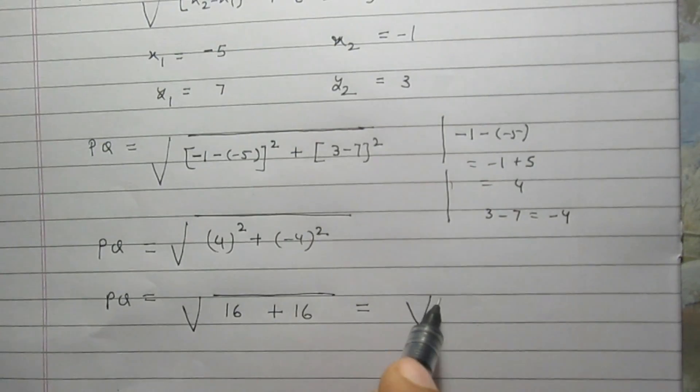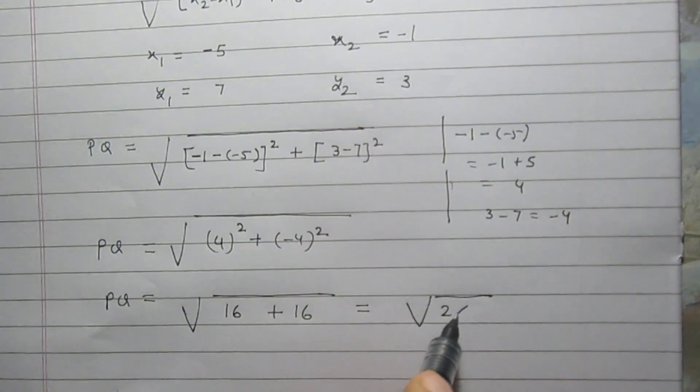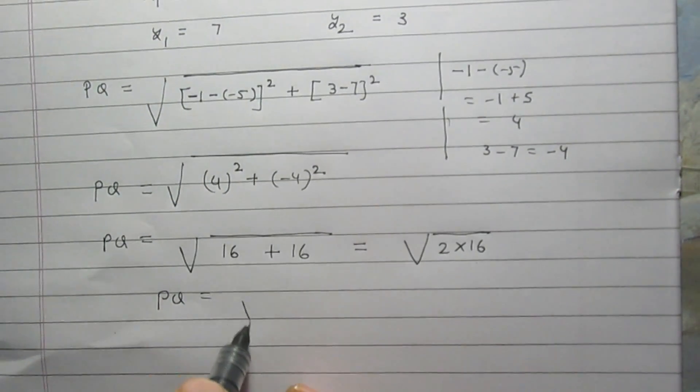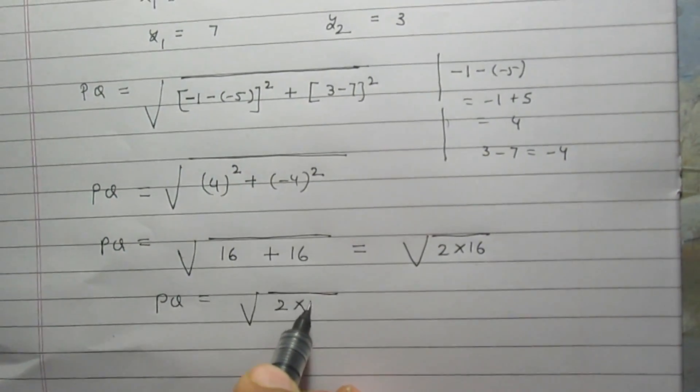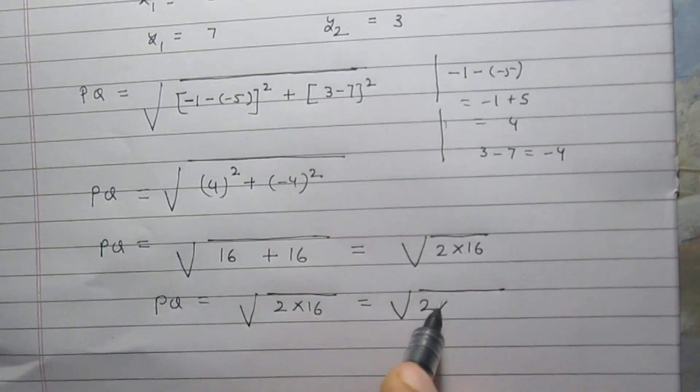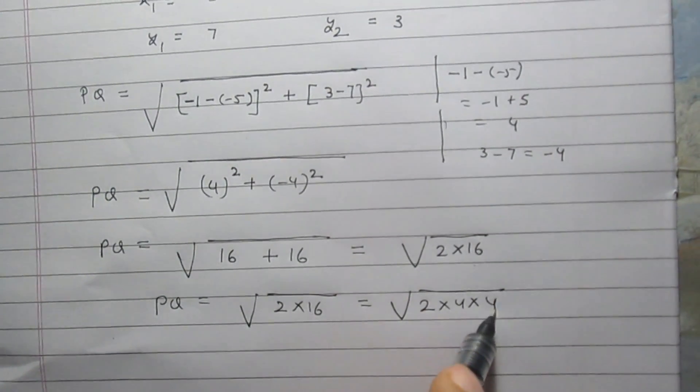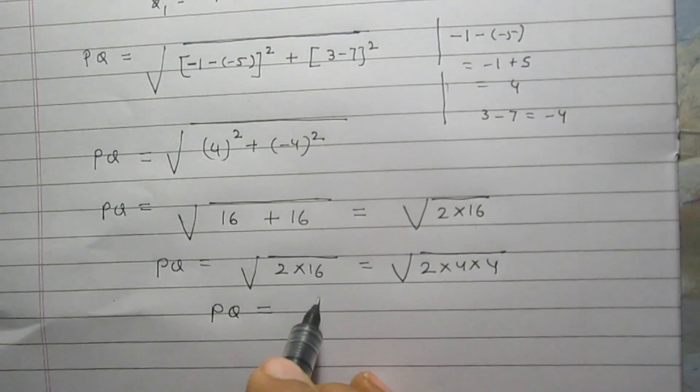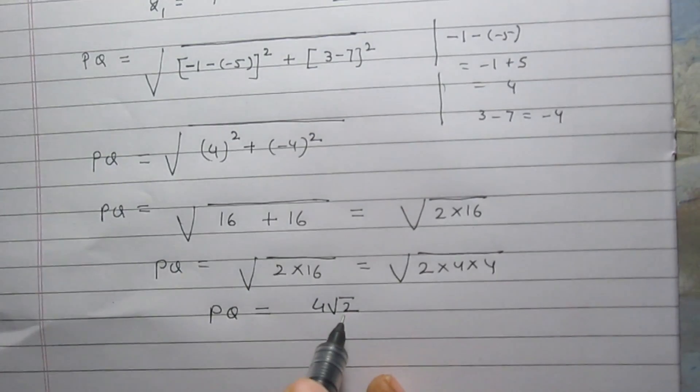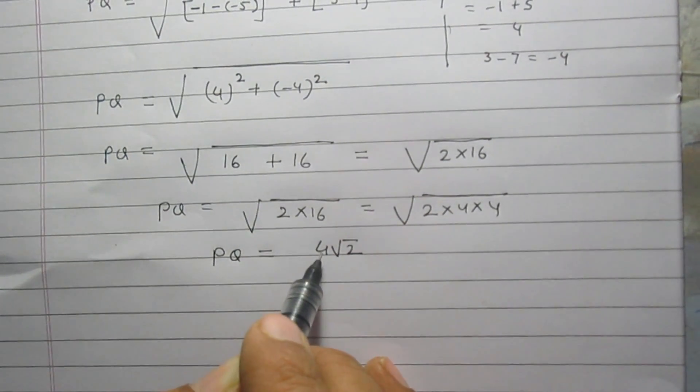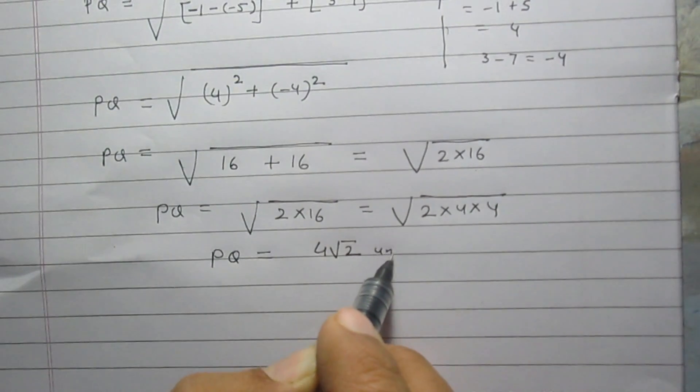So, it is the square root of 32, and we can simplify it as √(2 × 16) = √2 × 4, and finally we get PQ is equal to 4√2. So, the distance between points P and Q is 4√2 units.